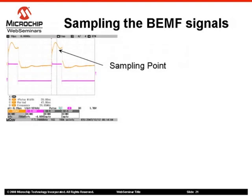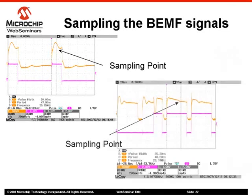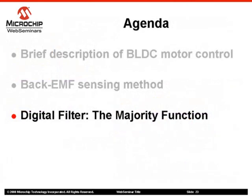The point at which the signals are sampled is variable across the PWM on time, depending on the motor speed. At low speeds, the DSPIC ADC device samples the back EMF signals at 50% of the PWM on time. However, the sampling point moves forward according to the PWM duty cycle to reach the maximum point of 75% of the PWM on time when the PWM duty cycle is equal to 100%. In this section, we will discuss the principle of the digital filter, the majority detection function.